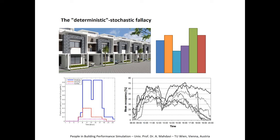That would mean that if you run a simulation program multiple times, based on the embedded random nature of probabilistic models, you get different results. Typically, these results — if repeated using the Monte Carlo method — would in aggregate reproduce the tendencies assumed at the outset, but individual simulation runs would give varied results that could be argued to be a more realistic representation of what is going on in the building.